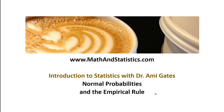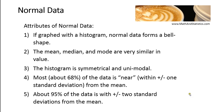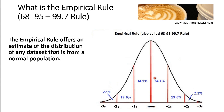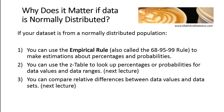This video is going to focus on normal probabilities and how to use the empirical rule to calculate things like percentages, areas under the curve, probabilities, and so on and so forth. The empirical rule is also sometimes called the 68-95-99.7 rule, and we'll see why that is in just a moment.